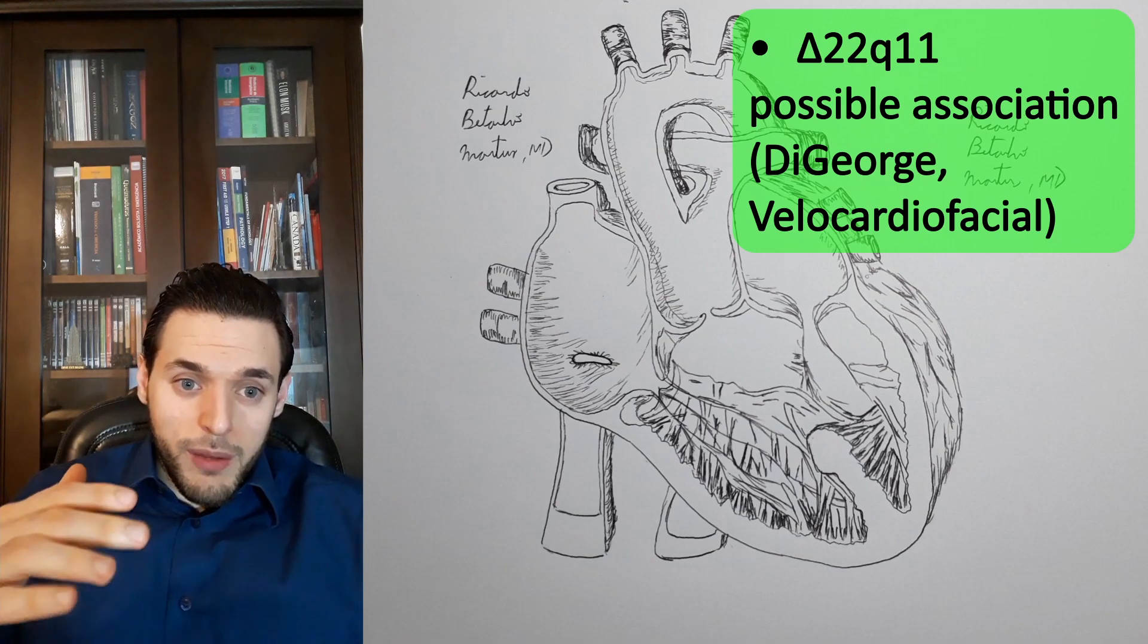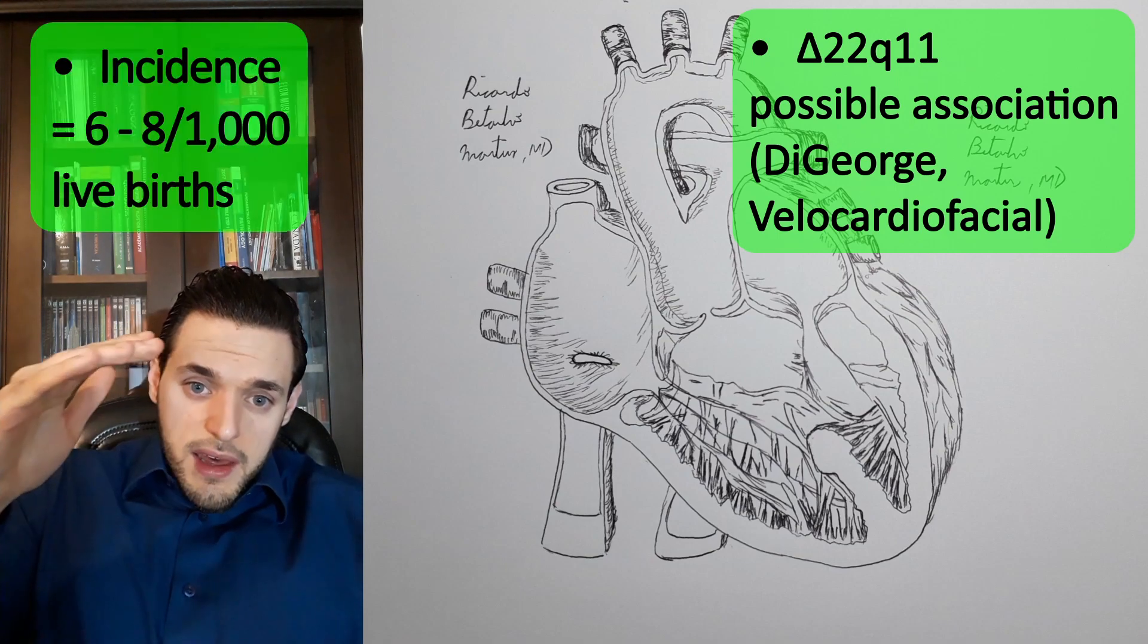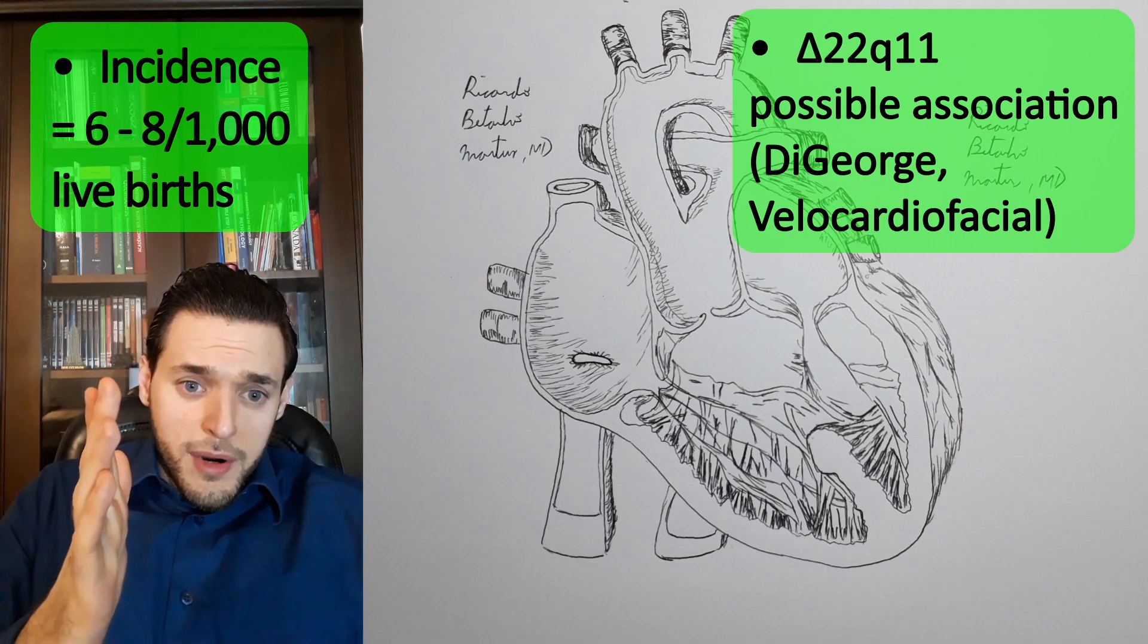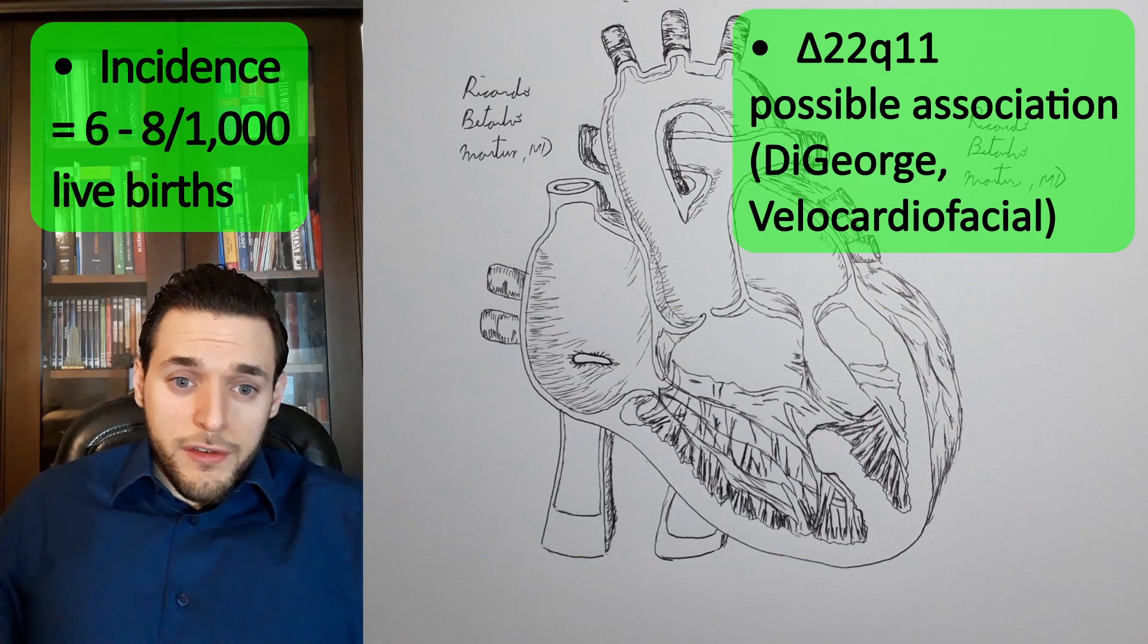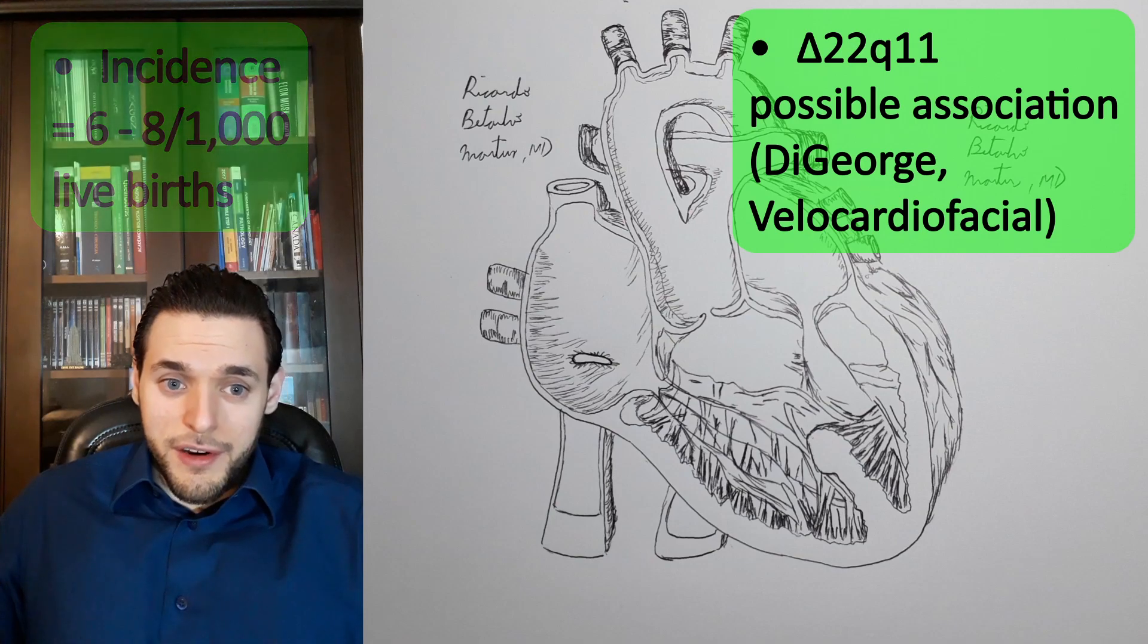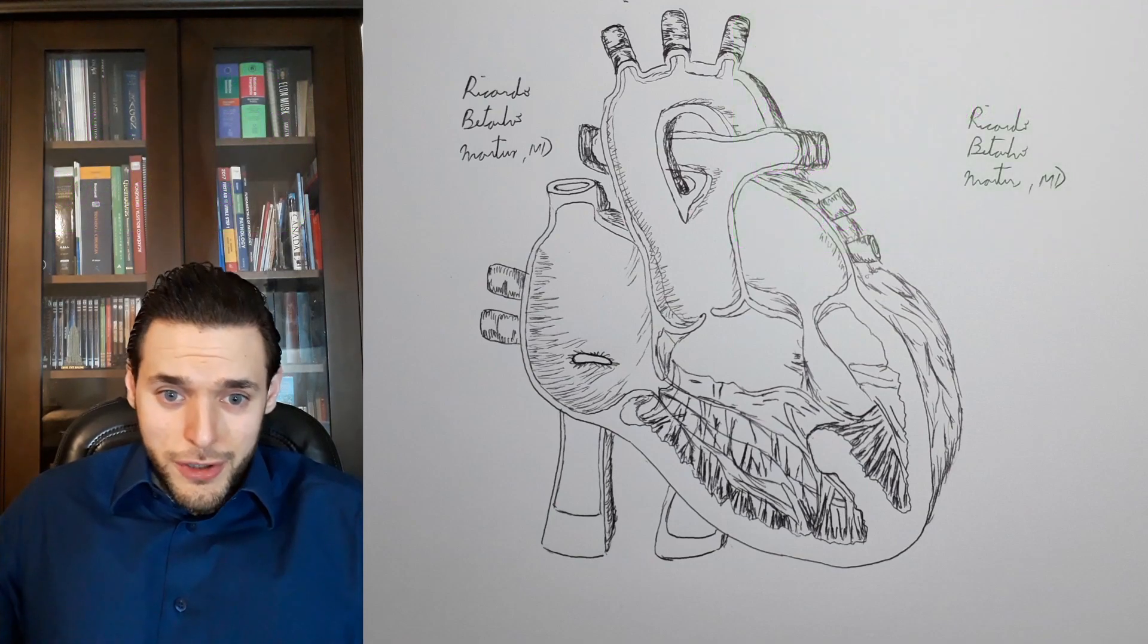Its incidence is thought to be between 6 and 8 per 1000 live births. Mortality is almost 100% in the first year of age without surgical intervention.